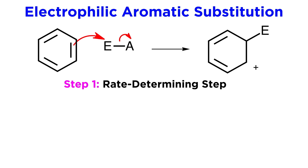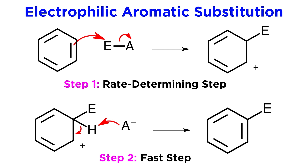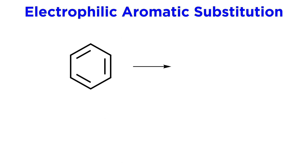The reason benzene proceeds by a different pathway is that there is a high energetic premium placed on maintaining aromaticity, because it is such a stabilizing effect. And because benzene is so stable, the first step — where aromaticity is broken — will necessarily be the rate-determining step, with a high activation energy, whereas the second step is quite fast, as it is thermodynamically favorable to restore aromaticity. To get more specific in terms of what types of groups we can put on the benzene ring, let's see some examples.